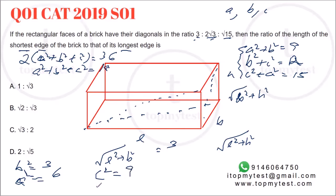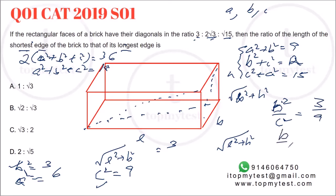We need to find the ratio of the shortest to longest edge. B squared over C squared equals 3 over 9, so B over C equals 1 over root 3. Option A is the correct choice. In an exam situation, maximum 2 minutes to solve.